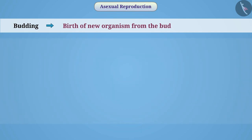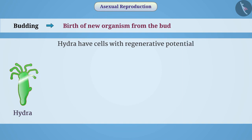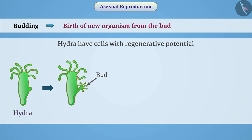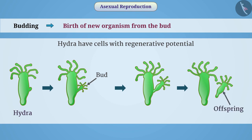Budding. Some organisms, such as Hydra, have cells with regenerative potential. When the Hydra is fully grown, the regenerative cells divide by creating a bulge — that is, a bud on the body wall. This bud develops into a small Hydra. Upon sufficient growth, these organisms separate from the parent Hydra and become independent organisms.